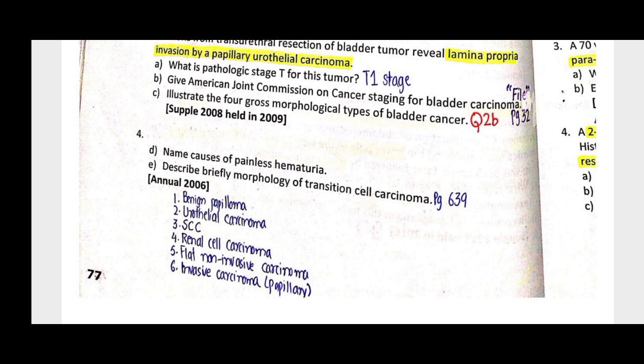High-grade carcinoma can involve perivesical or extravesical tissue and may metastasize via lymphatics or hematogenous spread to liver, lung, or bone. This covers the complete morphology of urothelial carcinoma.